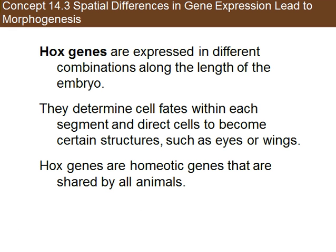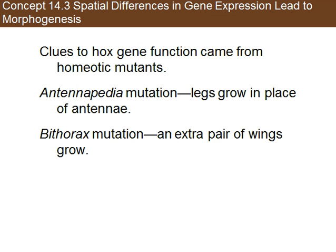Hox genes are expressed in different combinations along the length of the embryo. They determine cell fates within each segment and direct cells to become certain structures such as eyes or wings. Hox genes are homeotic genes, found within what we call the homeobox, which is where organ determination occurs. Notably, all Hox genes are shared among all animals — the segmentation and organ production is very similar from one species to the next.